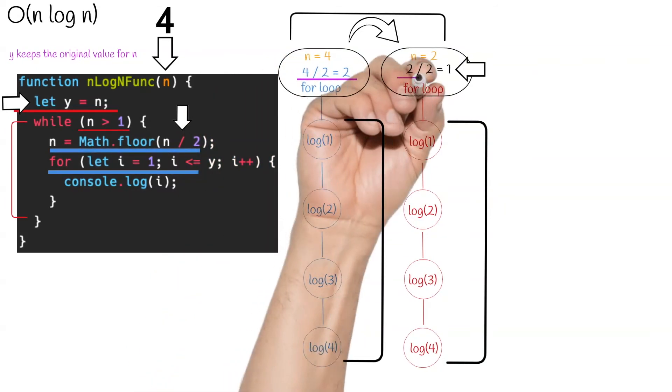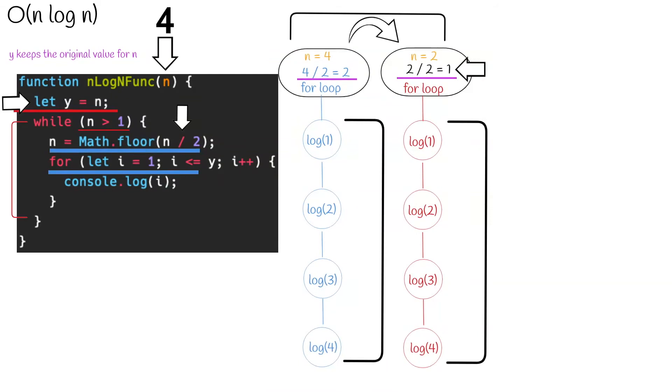This means that this top level loop never actually iterates through the full size of our input. The value for n is being split in half for each iteration, which is why we would say that this top level loop has a complexity of O log n. If you are confused about why this top level loop is O log n, let's take some time to prove it by writing it out.